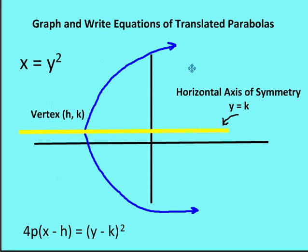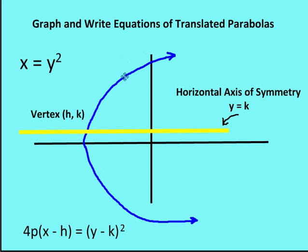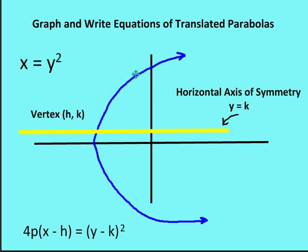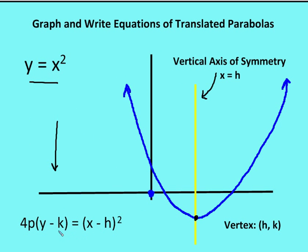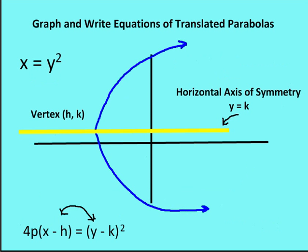I can also move a parabola that faces right or left to change the vertex. The parent function is x is equal to y squared, and again my vertex is h, k. For a horizontal axis of symmetry the formula becomes 4p times (x minus h) is equal to (y minus k) squared. Compare that to 4p times (y minus k) equals (x minus h) squared for a vertical axis of symmetry. One term has no squared value and the other term has a squared value.